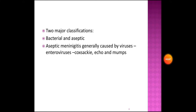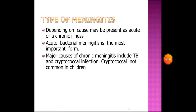The two major classifications of meningitis are bacterial meningitis and aseptic meningitis. Aseptic meningitis is generally caused by viruses such as enteroviruses, coxsackievirus, echovirus, and mumps virus. The types of meningitis depending on cause may present as acute or chronic illness. Acute bacterial meningitis is the most important form.